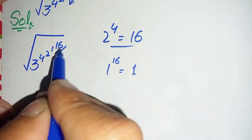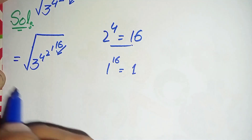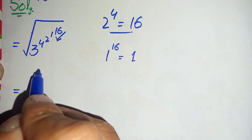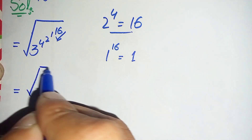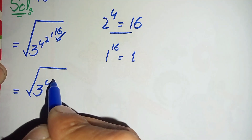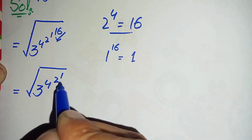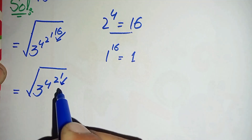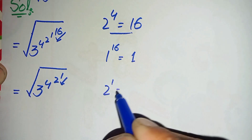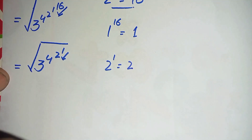We will replace 1 raised to power 16 with 1, so the expression becomes the square root of 3 raised to power 4, raised to power 2, raised to power 1. Now we will solve 2 raised to power 1. 2 raised to power 1 is 2, so we replace 2 raised to power 1 with 2.